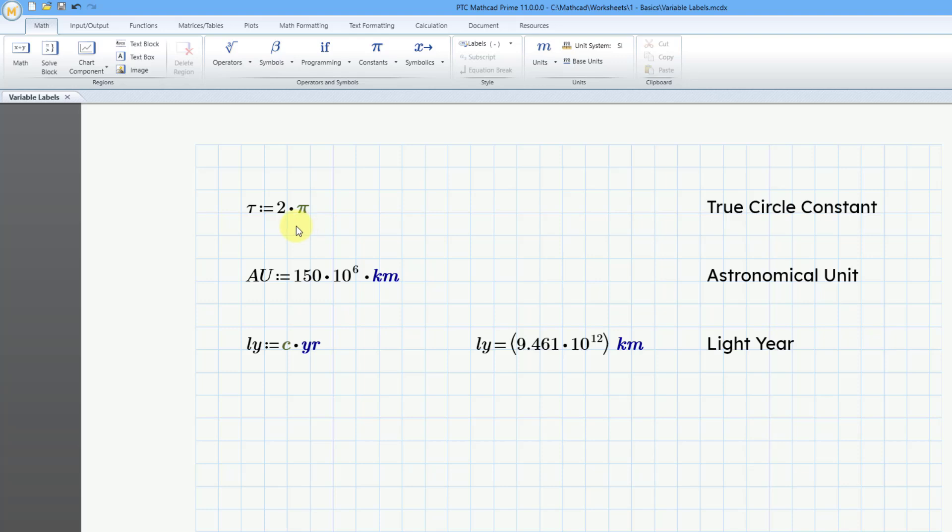So I am a Tauist. I believe in Tau as the true circle constant, which is 2 times Pi. By the way, the reason that we believe in Tau is because we believe the true circle constant is the diameter divided by the radius.